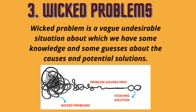The third one is wicked problems. A wicked problem is a vague undesirable situation about which we have some knowledge and some guesses about the causes and potential solutions. For example, climate change is an undesirable situation — the climate is changing rapidly beyond our capacity to control it. The causes can be many, some of which have been proven and some have not. Wicked problems are systematic problems. Climate change is the biggest systematic problem and contains several subsystems which each cause serious undesirable situations. For example, poverty is one of the main drivers of climate change. When people are poor, they are careless about the quantity of consumption, and often it's the cheaper product that yields more negative environmental impacts on the planet.